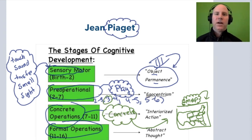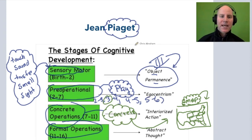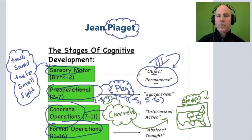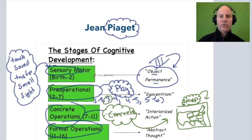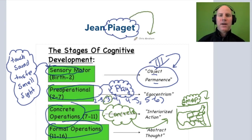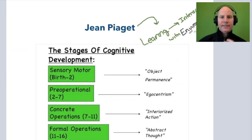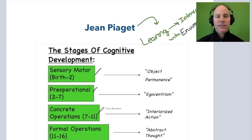So with Piaget, we have these major stages. Go review each one — each has core vocabulary, like sensory motor and object permanence. Each stage describes a different way children learn in that specific developmental area. Each one talks about how learning occurs through interaction with the environment, and it's this interaction with the environment in each stage that promotes cognitive development.